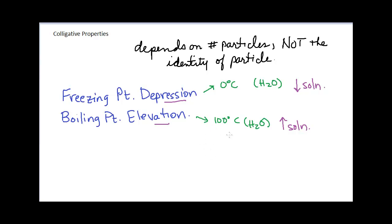We can understand this by looking at the relationship of vapor pressure above a liquid. The vapor pressure is lowered when you add a solute, which is why the boiling point is raised and can also explain why the freezing point is lowered. The bottom line is: if you add something to water, it will freeze below 0°C and boil above 100°C. How much the temperature changes does not depend on the identity of the substance added — only on the number of moles.